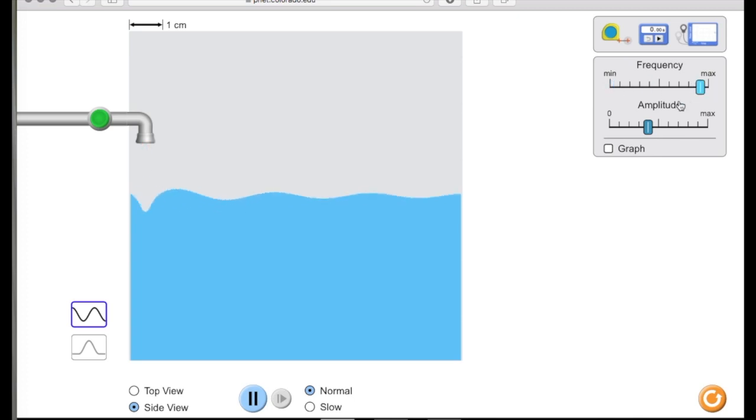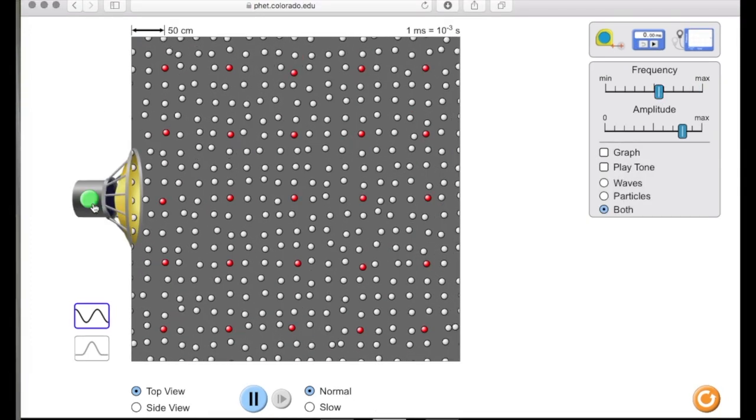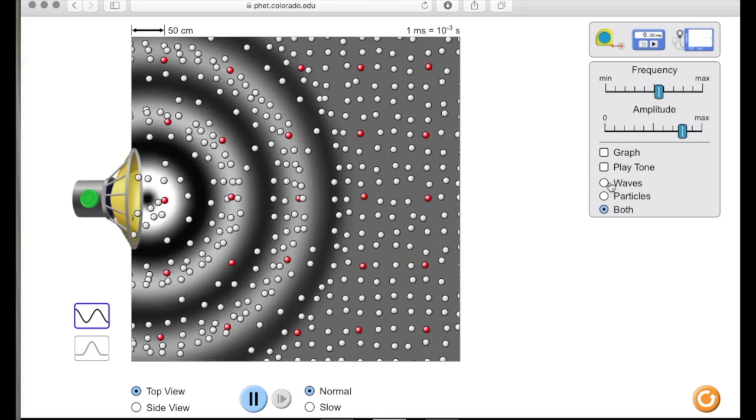The drip rate controls the frequency at which the waves are produced. In the sound simulation, we can control the frequency of the speaker cone. As the cone pushes in and out, it bumps the air molecules around it.